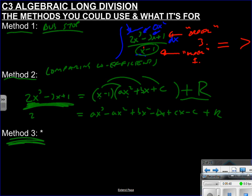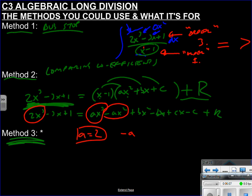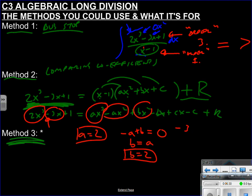Comparing coefficients: the coefficient of x³ on the left is 2, so a = 2. For x²: -a + b = 0, and since a = 2, b = 2. For x: -b + c = -3, so we can find c. We keep going to find c and r. That's quite a nice method. Method 3 is a blend of method 1 and method 2, and that's what we'll do now.